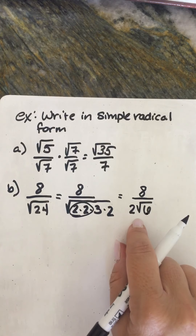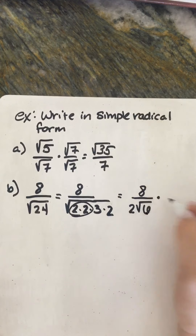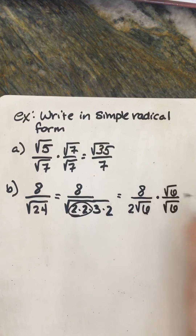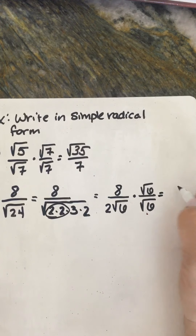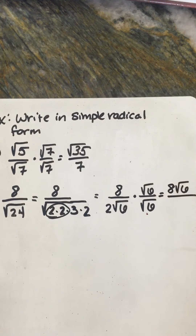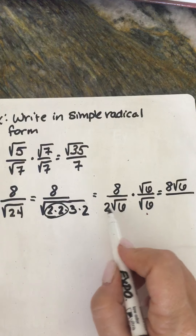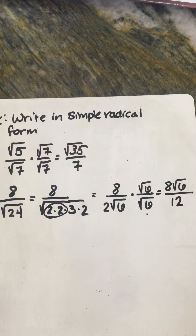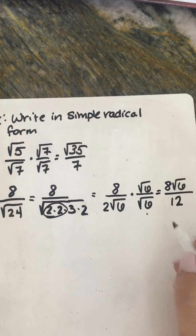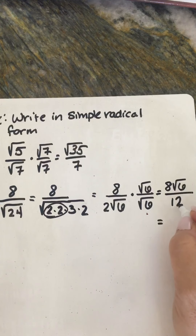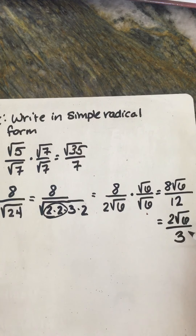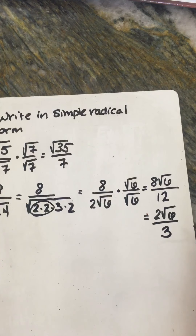So let's fix that. We multiply by square root of 6 over square root of 6. We get 8 square root of 6 divided by — square root of 6 times square root of 6 is 6, times 2 is 12. Now 8 and 12 can be reduced: 4 goes into 8 twice, 4 goes into 12 three times. So our answer is 2 square root of 6 over 3. And we are not dividing the square root of 6 and the 3.